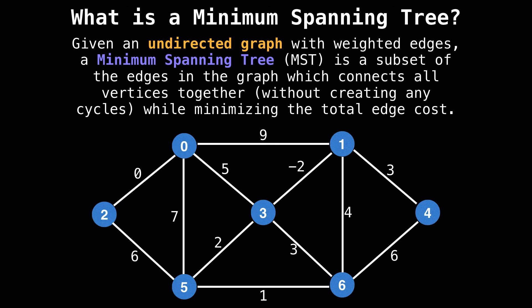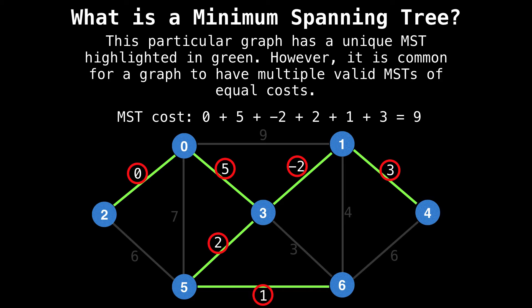Here's a weighted graph with nodes labeled zero through six with various edges of different costs. One possible minimum spanning tree is the following edges highlighted in green, whose edge costs sum to nine. There's no way to connect all the nodes together and get a lower cost than this. Note that even though the minimum spanning tree in this graph is unique, in general it's possible for a graph to have multiple MSTs of equal costs.